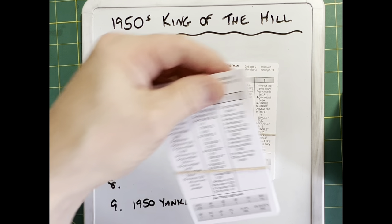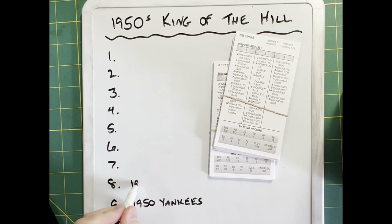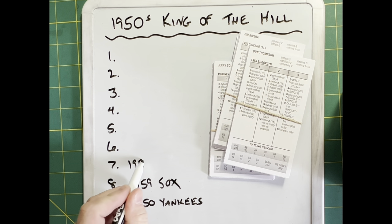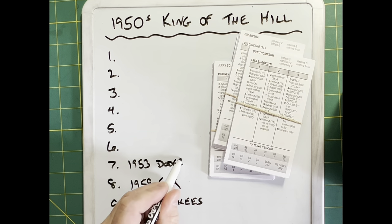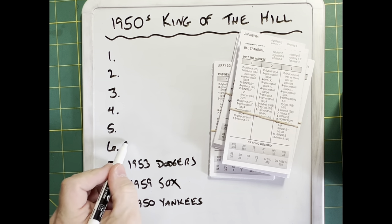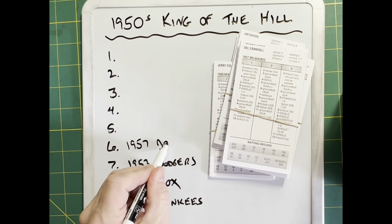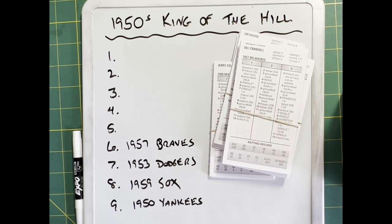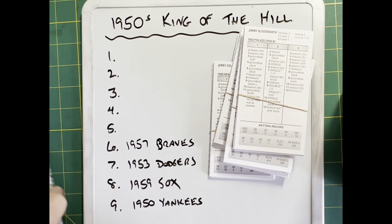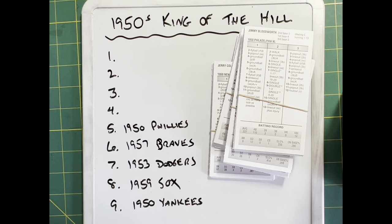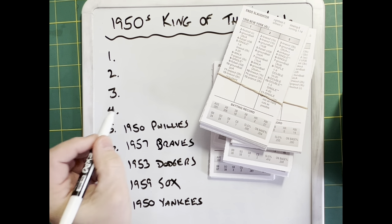Next up in our tournament, team number eight will be the 1959 White Sox. Next up, team number seven — the 1953 Dodgers. Next up, team number six — the 1957 Braves. Team number five — the 1950 Phillies.